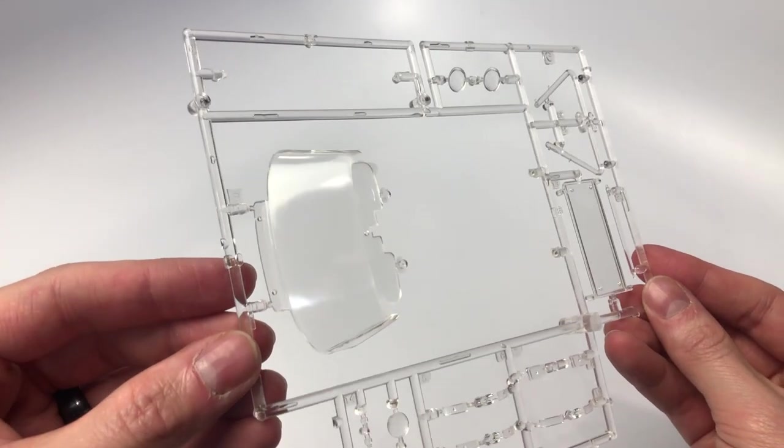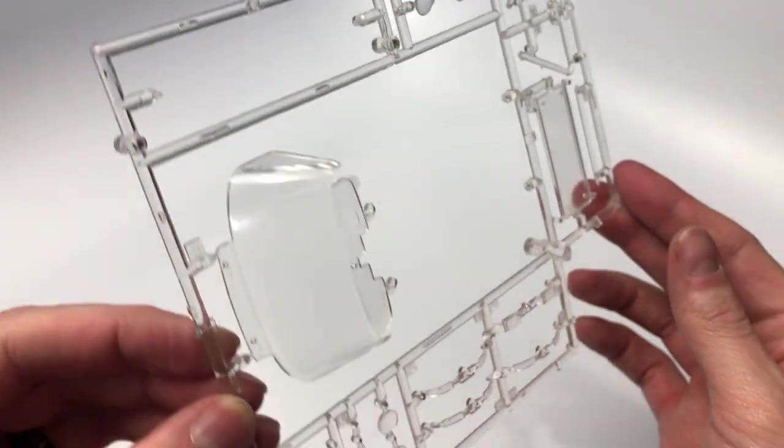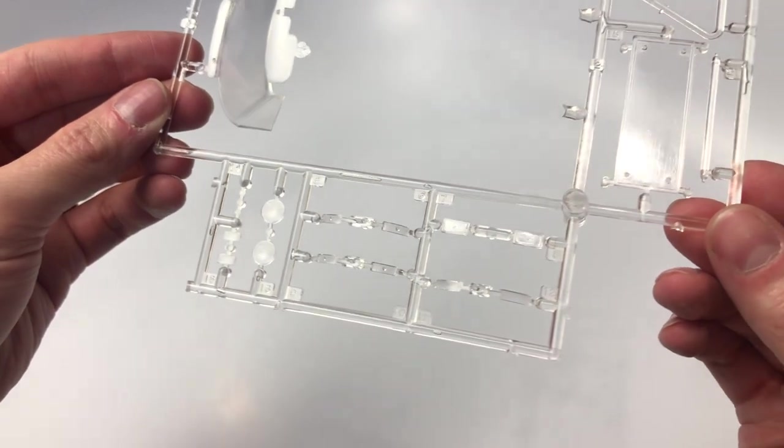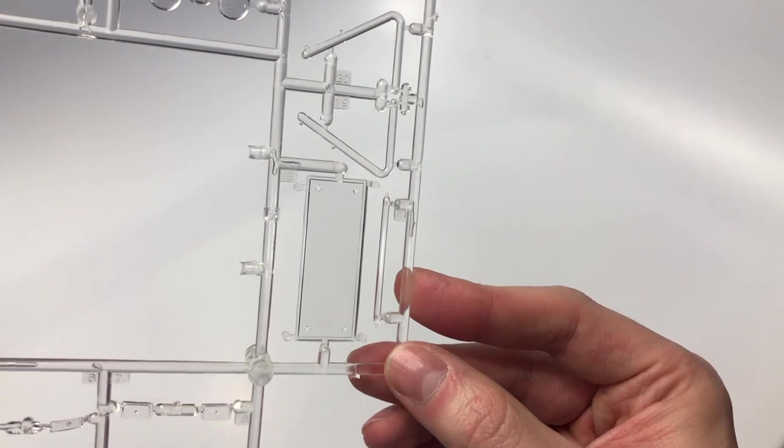The second clear parts sprue has the front windshield with the side window vents molded in, clear for the headlights and other clear parts which one appears to be the cover for the engine compartment so it is visible.